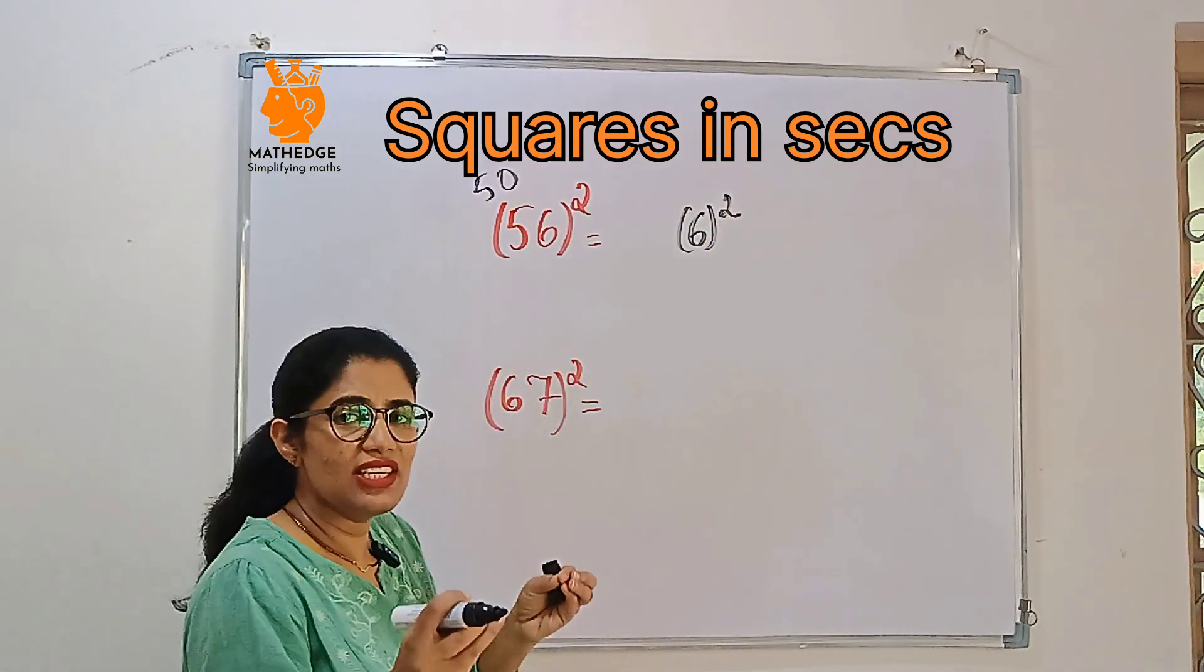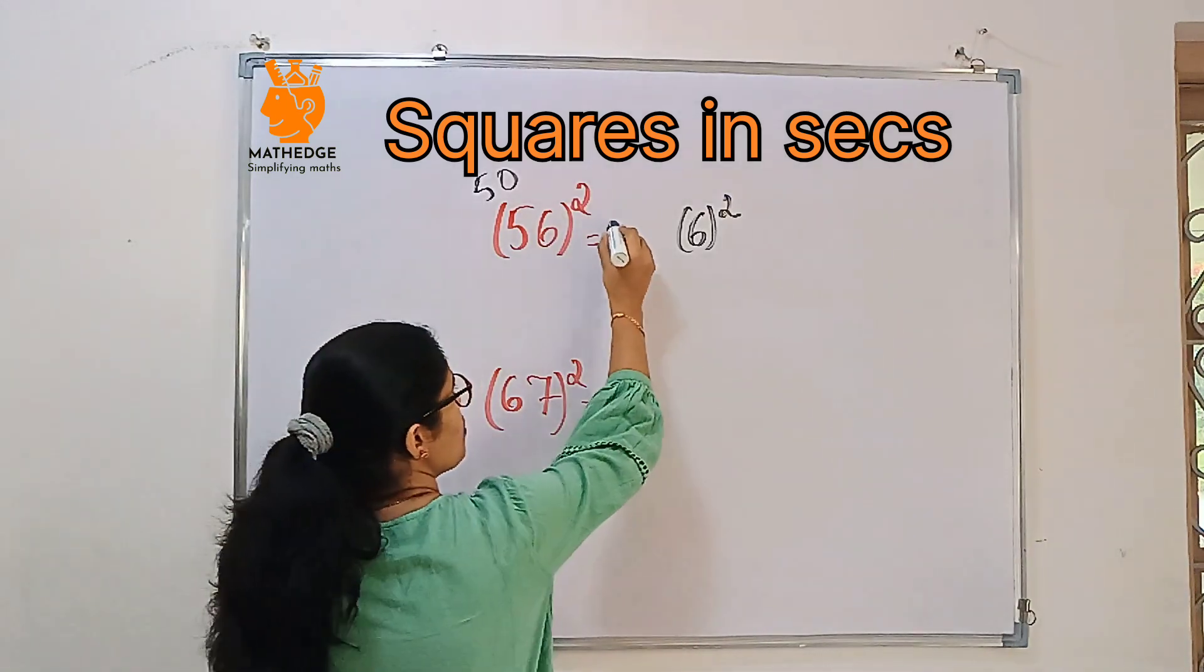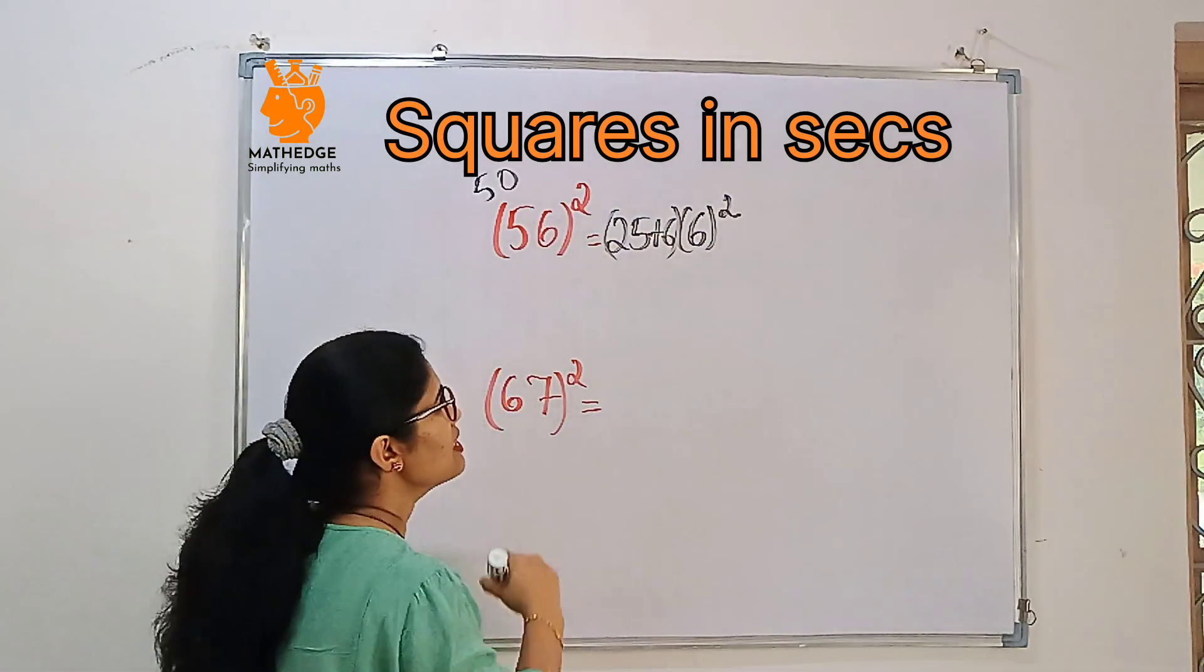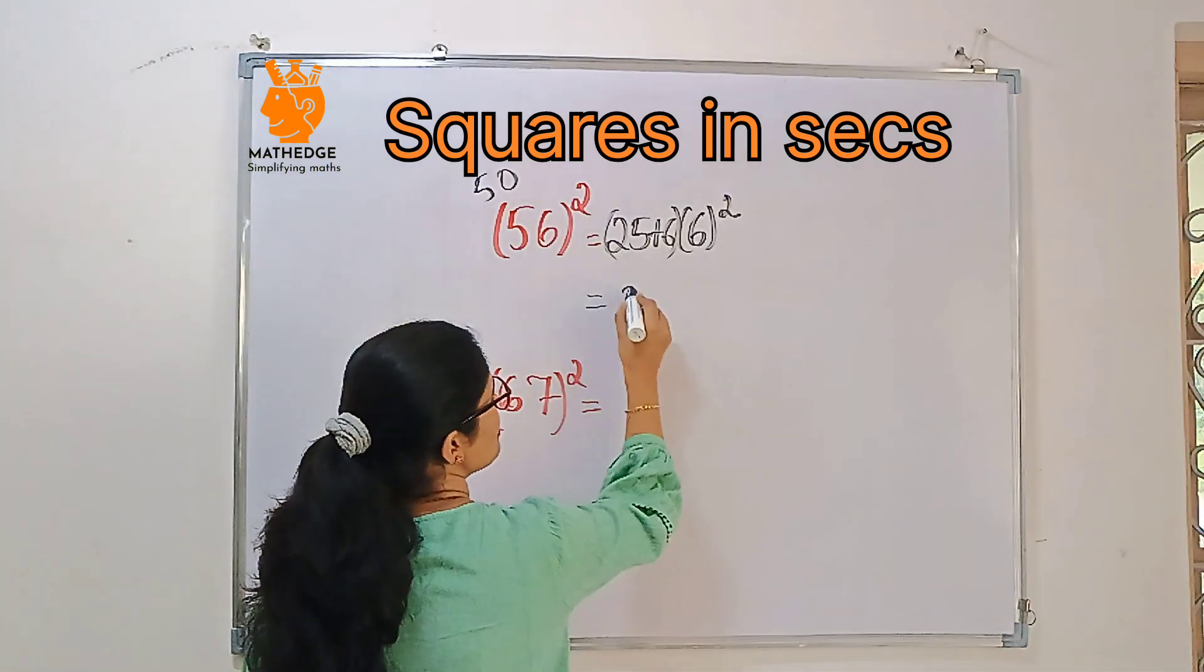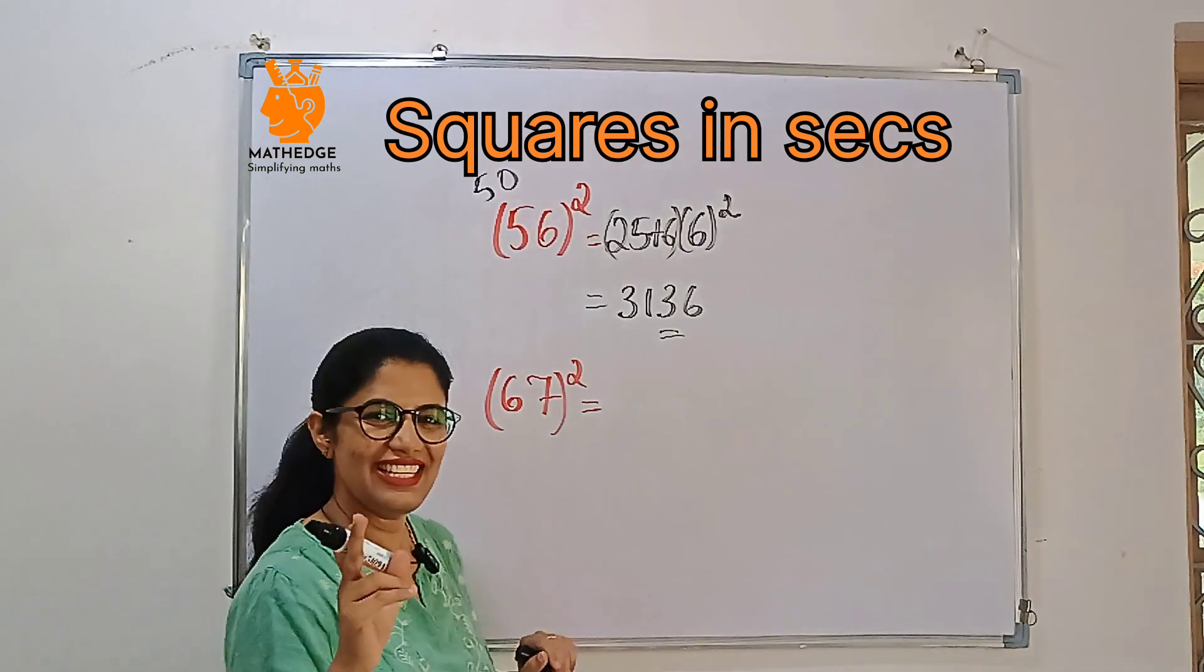Then after that, if it's below 50 we subtract, but if it's greater than 50, we should add. So 25 plus this extra number, 25 plus 6 is 31. And 6 squared is 36. So that's it: 3136. Easy right?